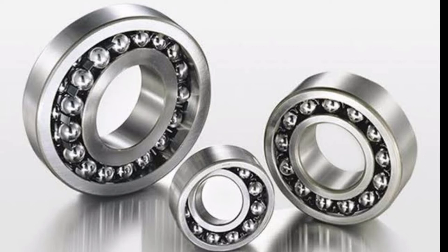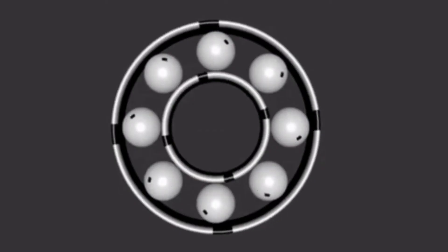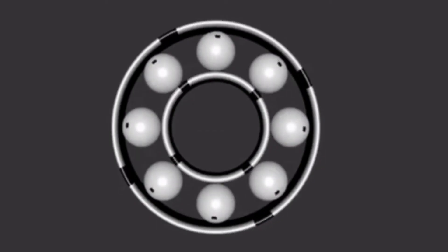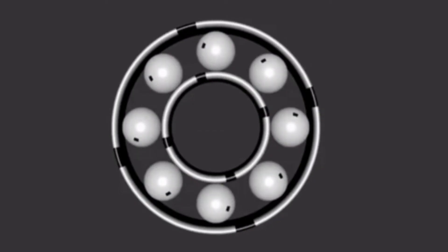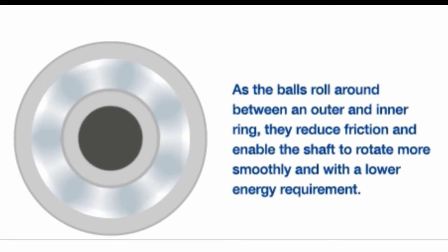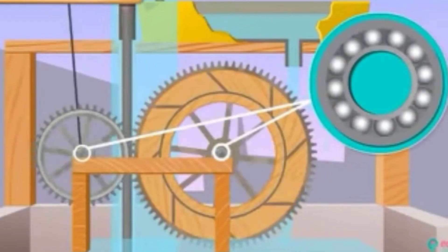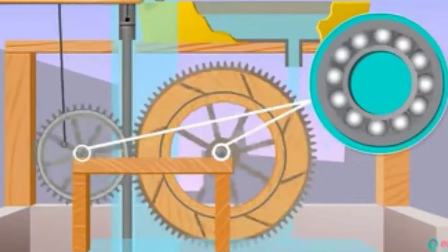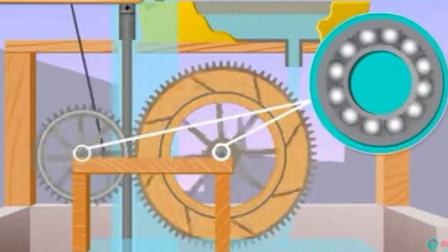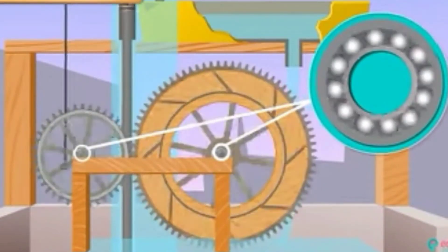Fourth, by using ball bearings. Ball bearings are used in machines to reduce friction. These are tiny steel balls often placed between moving parts of machines. It converts sliding friction into rolling friction.